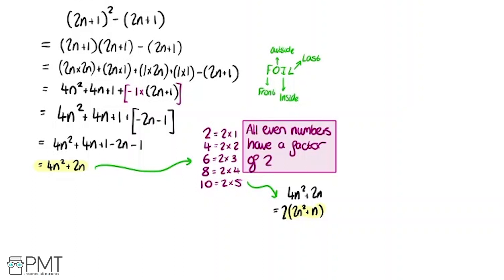So I'm just going to write a bit of a conclusion to the proof. So since 2 is a factor, which we've shown here, it is even for all positive integer values of n. And we completed the proof there.